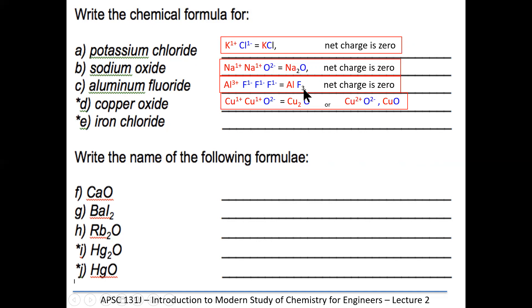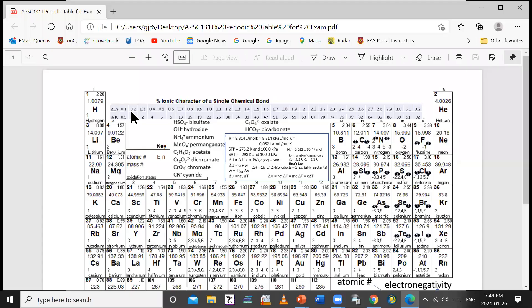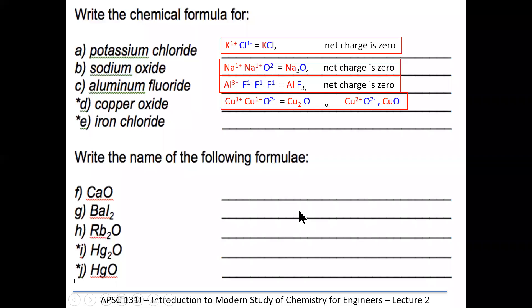For copper oxide, notice there's an asterisk because copper can have a charge of one or two. Therefore, there are two copper oxides: copper(I) oxide and copper(II) oxide. The charge on the copper determines which we use. We use a system with Roman numerals and put the charge in brackets in the name — for example, Roman numeral I for one. So there is no generic 'copper oxide' — there's copper(I) oxide and copper(II) oxide.